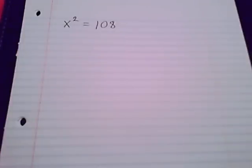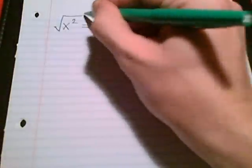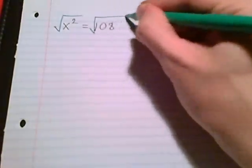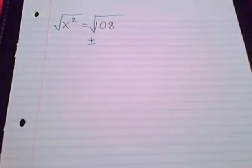Moving on to the next example: x squared equals 108. Because we have x squared all by itself and just a number on the other side, we can use the square root property — taking the square root of each side and accounting for a positive or negative result.